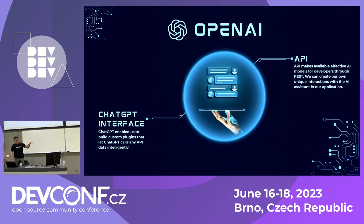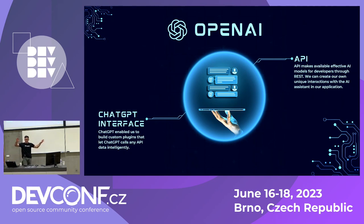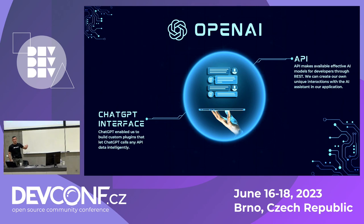If you're using ChatGPT, you know its capabilities — I won't promote it further. So the difference is: with the ChatGPT interface you can ask questions in a user-friendly way. The API makes these AI models accessible through REST, and you can interact with AI inside your application. This is one of the key advantages of using the API — you will see how it benefits things in my demo.